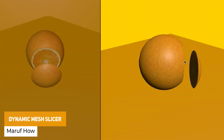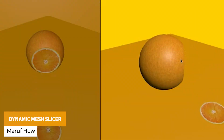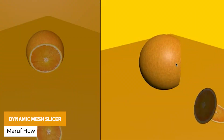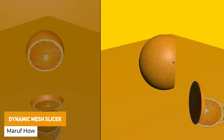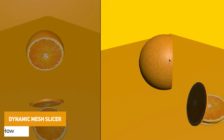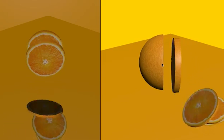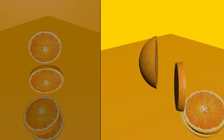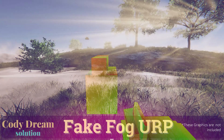Next is the Dynamic Mesh Slicer, which is a powerful asset that allows you to slice at runtime. It supports various types and can be used on static or skinned meshes. You can even generate clean watertight meshes after slicing, and you can see this done in the Unity inspector too.